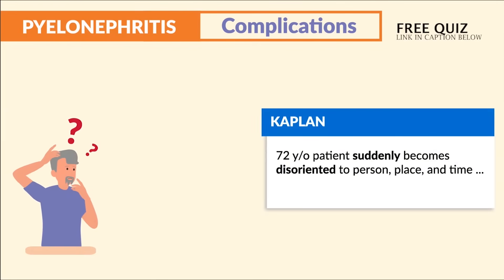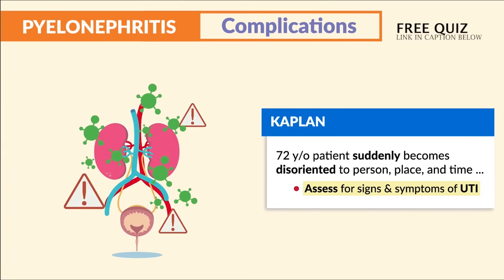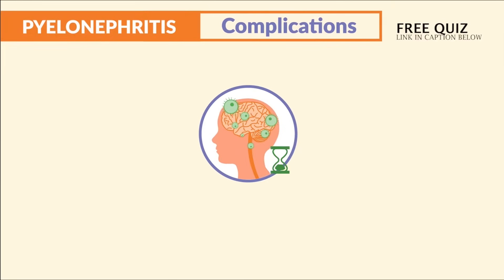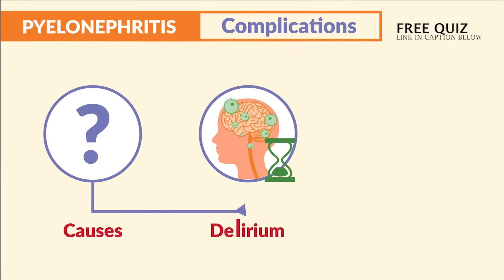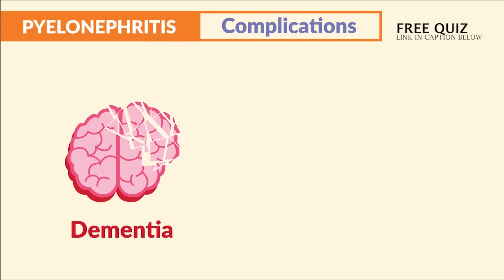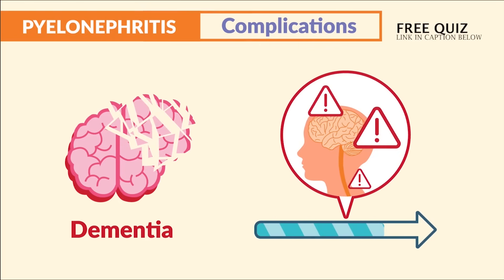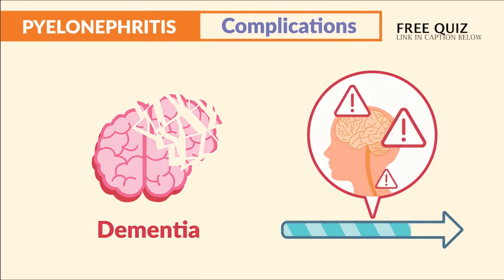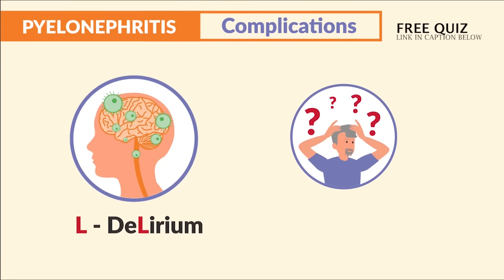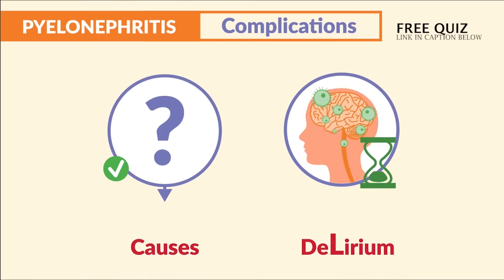A Kaplan question about a 72-year-old patient suddenly becoming disoriented to person, place, and time — the answer is to assess for signs and symptoms of a UTI. These episodes are known as acute delirium. Look for the L's in delirium: it lasts only a moment and resolves once the cause is treated. Delirium is not dementia — dementia involves long-term brain damage from long-term diseases or traumas.